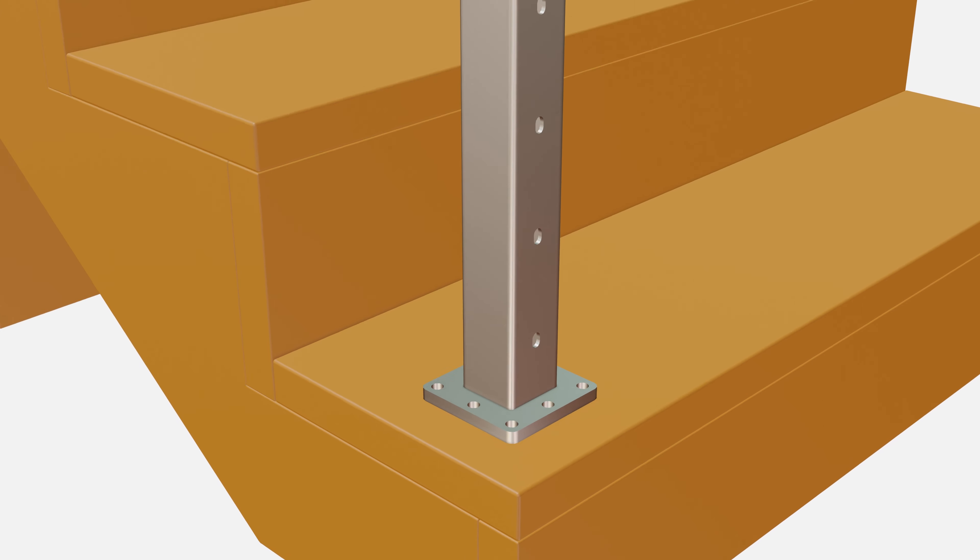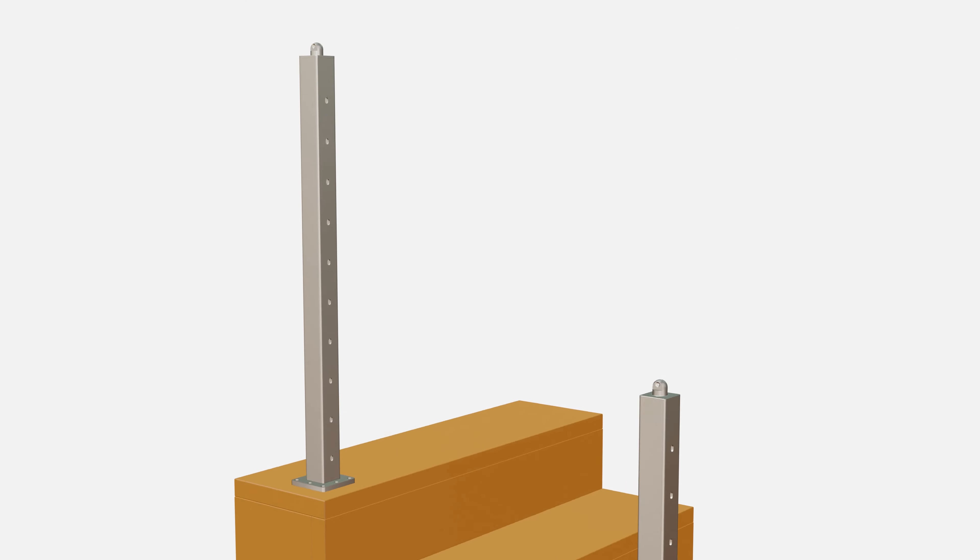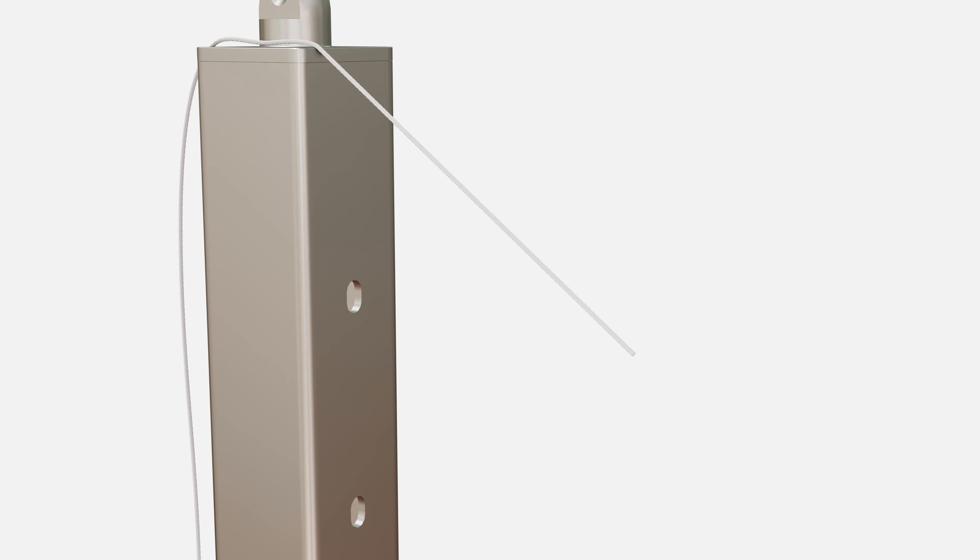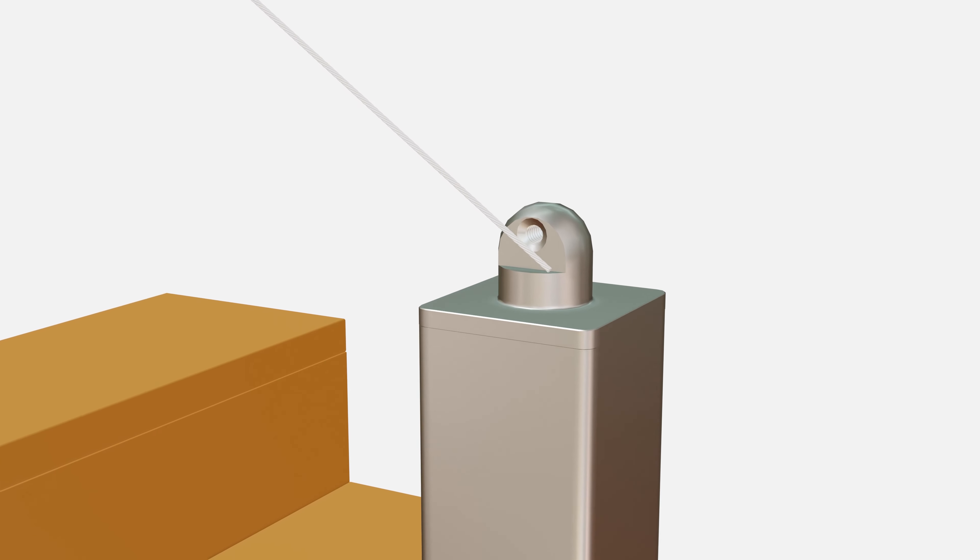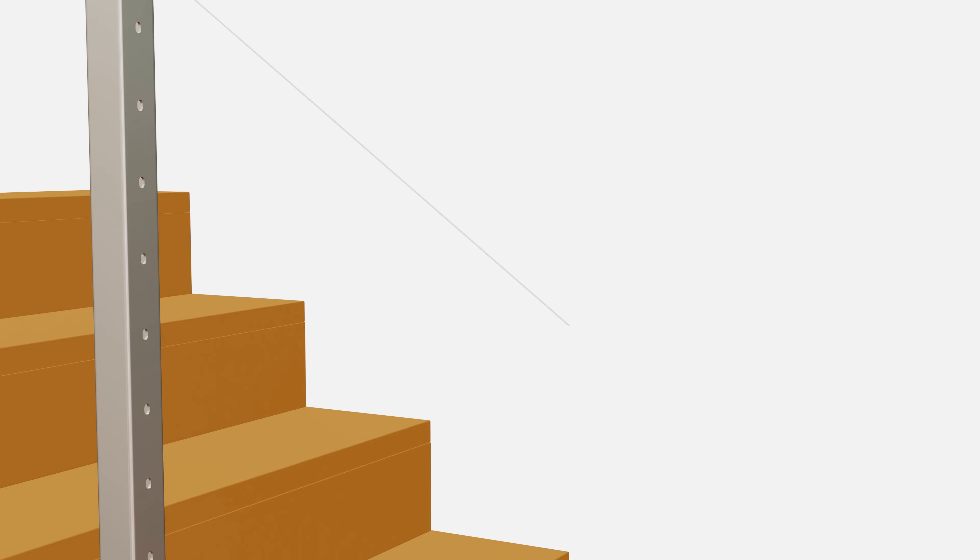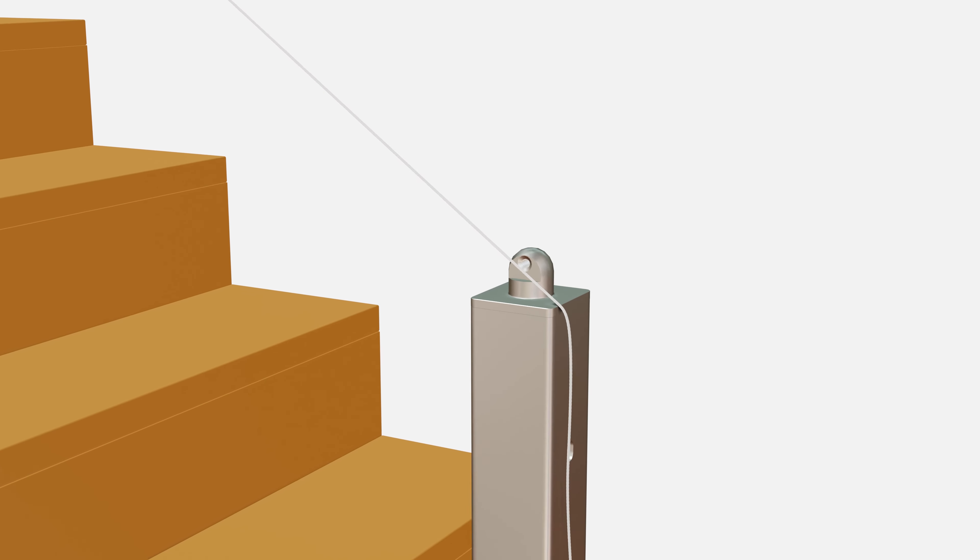When all of your posts are set in place, run a string along the top of the post to ensure that the angle is correct and that the tops of the posts are the same height. You will need slight tension on the string to provide a straight line. This is important to keep the handrail from bowing or bending when fastening your posts.